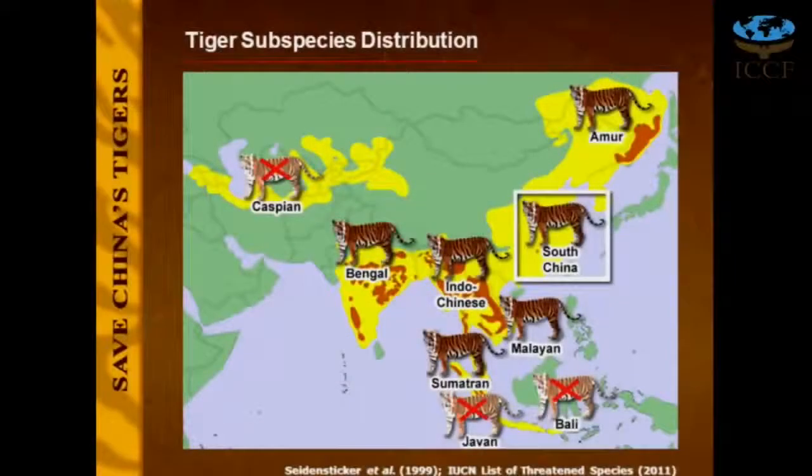There are nine subspecies of tigers and three have gone extinct. The next one to go extinct is the South China tiger. In fact, when I started the project in 2000, there had been predictions by certain conservation groups that the South China tiger would go extinct by 2010 if nothing was done.